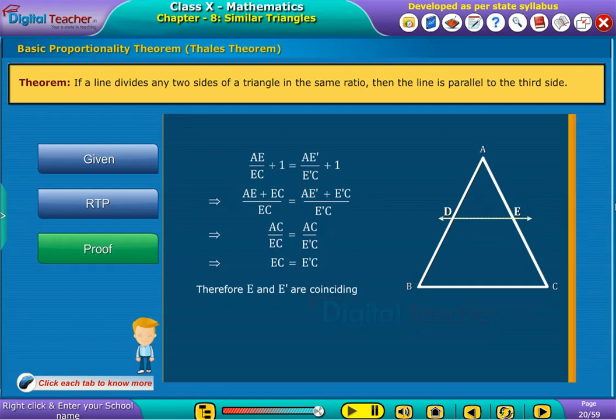Therefore, E and E' are coinciding. Hence, DE is parallel to BC.